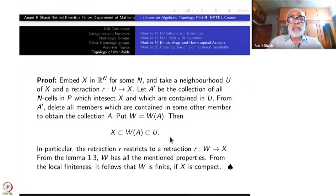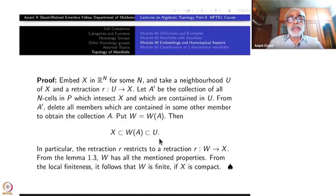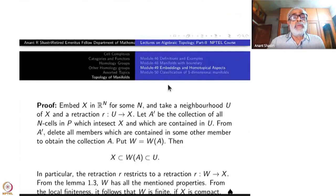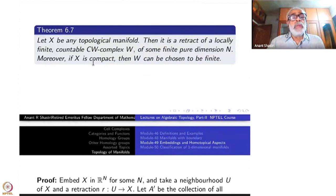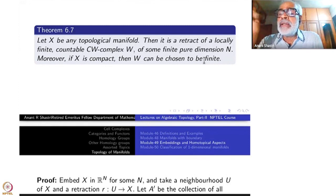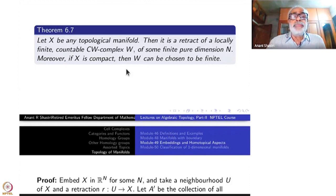X is contained inside W, and W is contained inside U because all n-cells making up W are contained inside U. And since there is a retraction from U to X, we can restrict it to W to get a retraction from W to X. The previous lemma tells us that W is a countable locally finite CW complex of pure dimension N, since all cells are contained inside an N-cell.